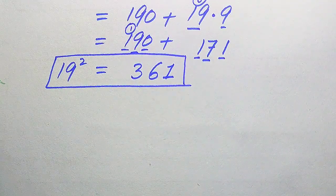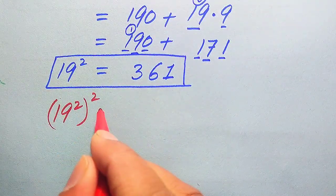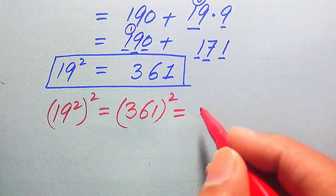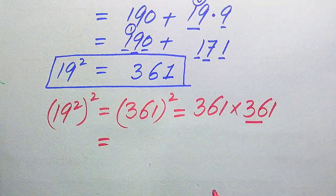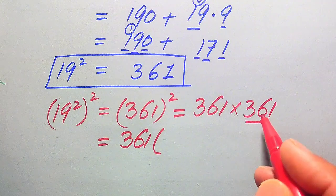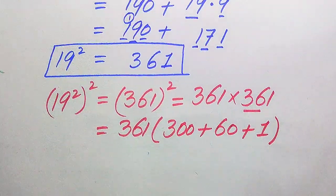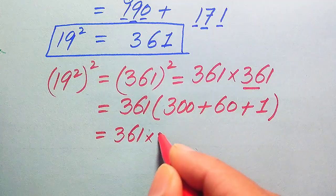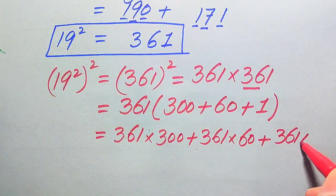Our target is (19²)², so we need to square 361. That means we multiply 361 by 361. We again break this value into hundreds, tens, and ones: 361 is written as 300 plus 60 plus 1. We then multiply 361 on each of these values: 361 times 300, plus 361 times 60, plus 361 times 1.